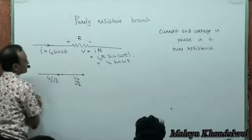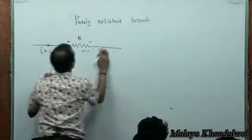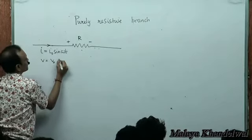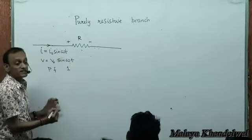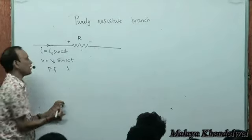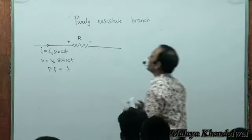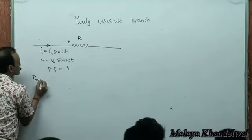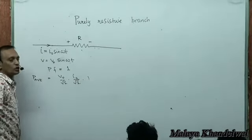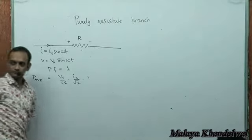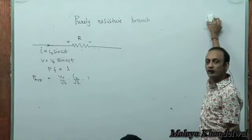The power factor for a purely resistive circuit is one, because φ = 0 and cos φ = 1. The average power over a full cycle is V₀/√2 × I₀/√2 × cos φ = V₀I₀/2. That is the average power in a purely resistive branch.